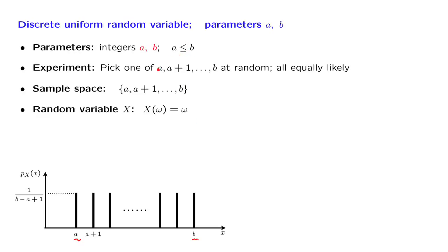We're thinking of an experiment where we're going to pick an integer at random among the values that are between a and b, with the endpoints a and b including. And all of these values are equally likely.